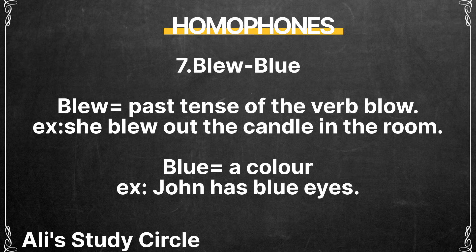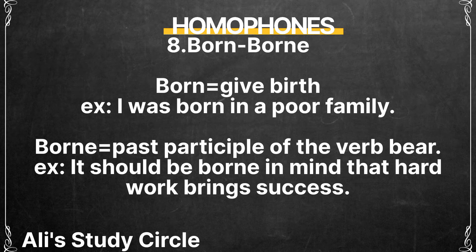The next pair is 'blew' and 'blue.' 'Blew' is the past tense of the verb blow — for example, 'She blew out the candle in the room.' 'Blue' is a color — for example, 'John has blue eyes.' Next is 'born' and 'borne.' 'Born' means to give birth — for example, 'I was born in a poor family.' 'Borne' is the past participle of bear — for example, 'It should be borne in mind that hard work brings success.'